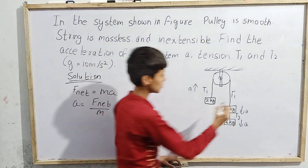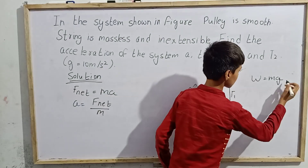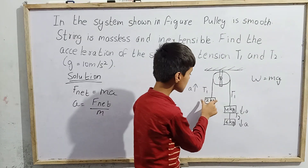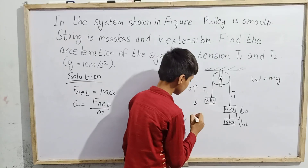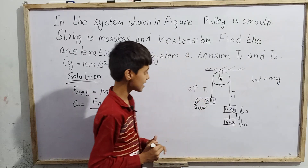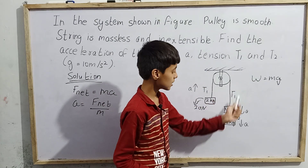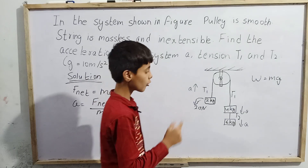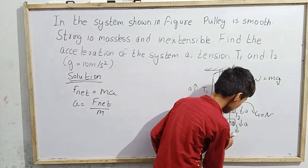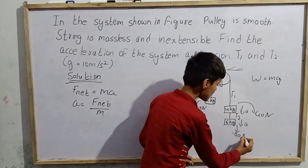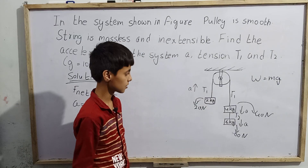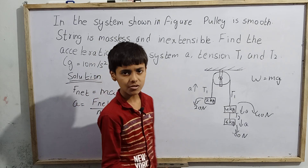Weight equals mg, g = 10 m/s². For the 2 kg block: weight = 2 × 10 = 20 newtons. For the 4 kg block: weight = 4 × 10 = 40 newtons. For the 6 kg block: weight = 6 × 10 = 60 newtons. So the weights are 20 N, 40 N, and 60 N.